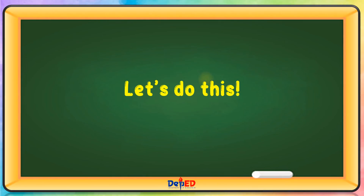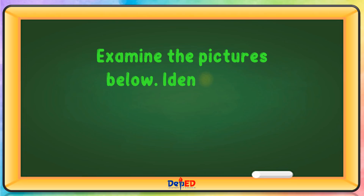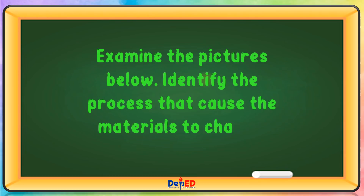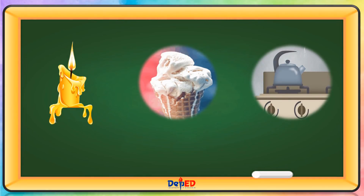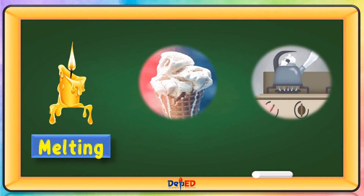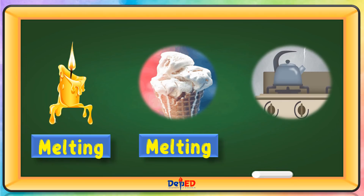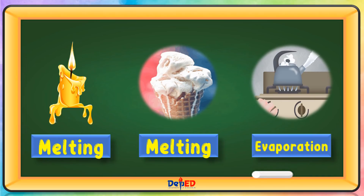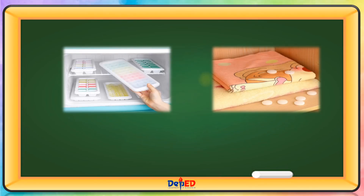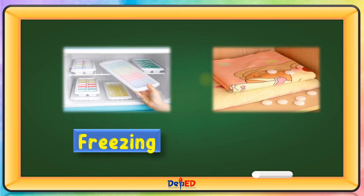Let's do this! Examine the pictures below and identify the process that caused the materials to change. A candle is melting. Ice cream is melting. Water is undergoing evaporation. An ice cube is freezing. And a moth ball is sublimation.